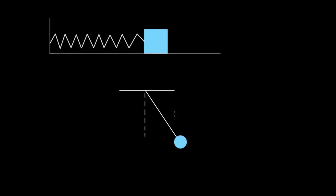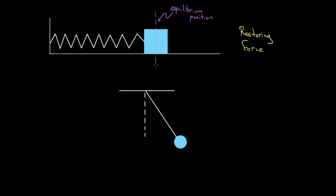All those examples share one common feature of why they're an oscillator. You could ask, why do these things oscillate in the first place? It's because they all share this common fact: they all have a restoring force. A restoring force, like the name suggests, tries to restore the system back to the equilibrium position — the point at which there's no net force on the oscillating object.